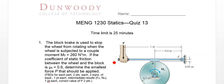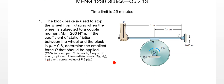Okay, the quiz 13 solution for Mechanical Engineering 1230 Statics. We have a wheel that has a moment applied to it. We have a block brake with some friction acting at the interface between the wheel and the brake. The brake is pinned at one end and a force is being applied at the other end. We are trying to determine what the smallest force we can apply is such that the brake holds.